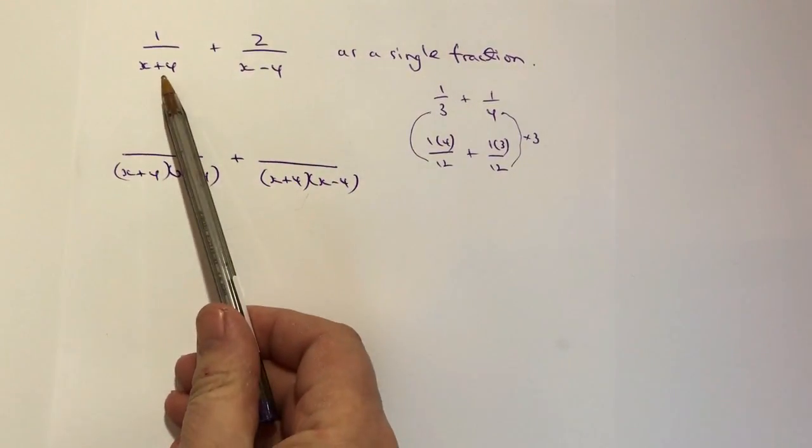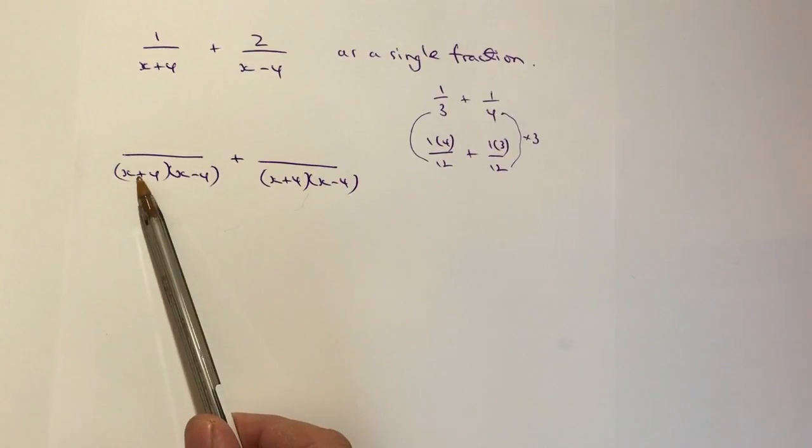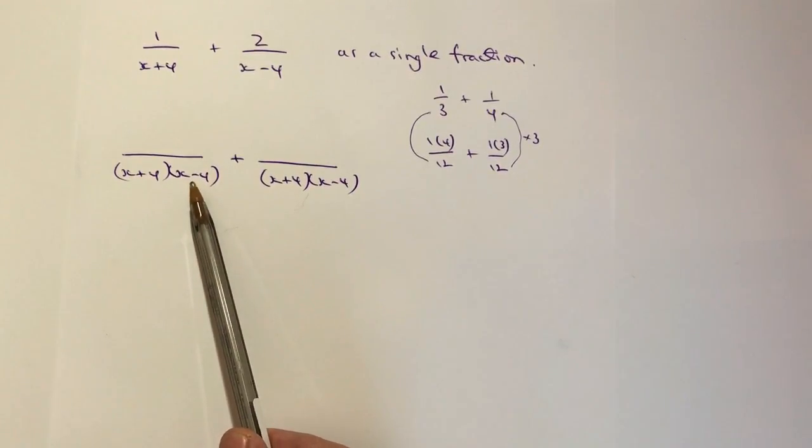So if we look at this what have I multiplied x plus 4 by to get x plus 4 times x minus 4? Well I've multiplied it by x minus 4 so I'm going to do the same to the top. I'm going to multiply 1 times x minus 4.